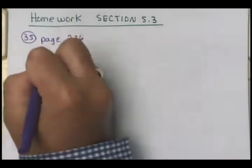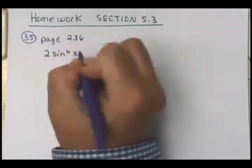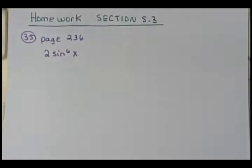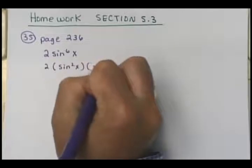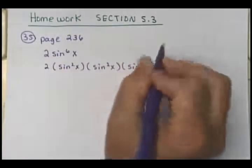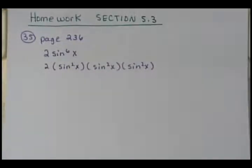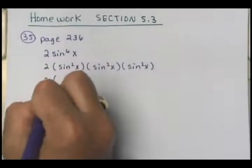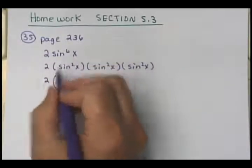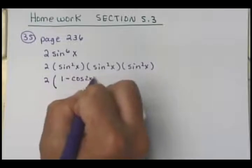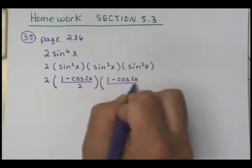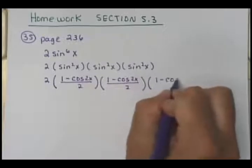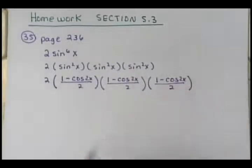Here you're given 2 sine to the 6th power of x. The first thing I would do is rewrite this as 2 times sine squared x times sine squared x times sine squared x, because when you multiply all that you would add your powers and that gives me my sixth power. So sine squared x is the same thing as 1 minus cosine of 2x, all over 2. So is everybody with me there?